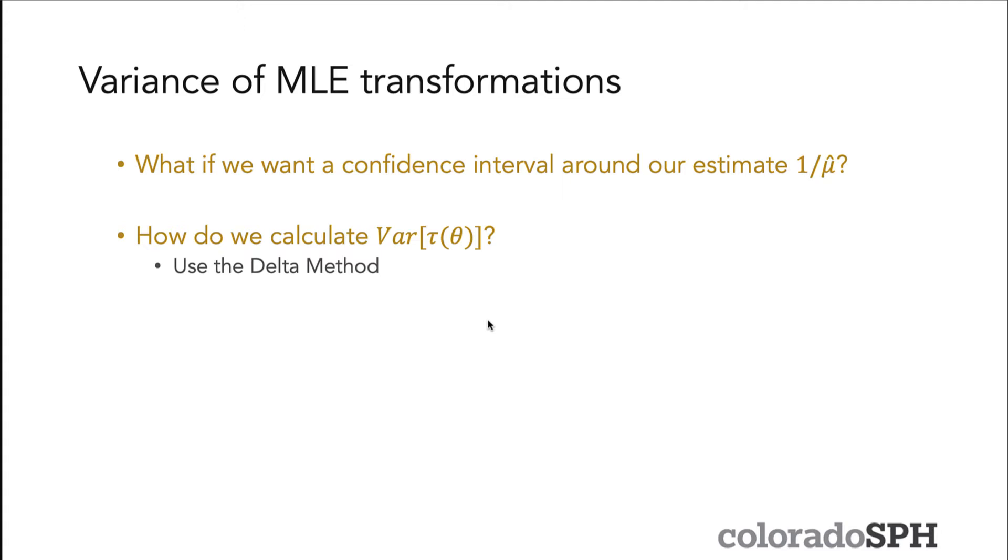What if you calculate 1/Ȳ or 1/μ̂ and you also want to get a confidence interval around those values? In order to do that, you would need the variance of that transformation of the estimator, and you can do this using the delta method.